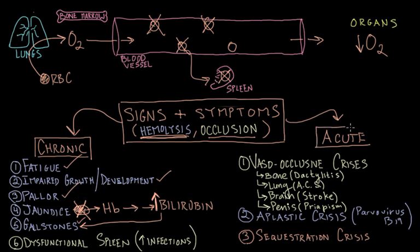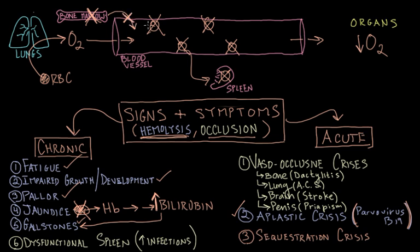Hemolysis also helps explain a particular acute manifestation called aplastic crisis. Because we're constantly destroying red blood cells, the bone marrow has to replenish them. In aplastic crisis, the progenitor cells inside the bone marrow are infected with a virus called parvovirus B19, which essentially shuts down the production of red blood cells. As a result, patients can become very severely anemic. So hemolysis accounts for many chronic manifestations but also this acute manifestation.